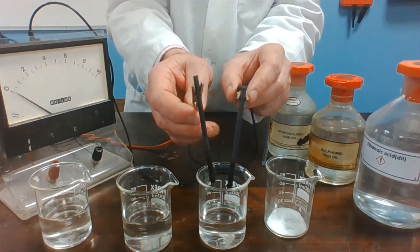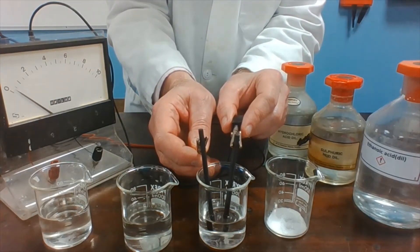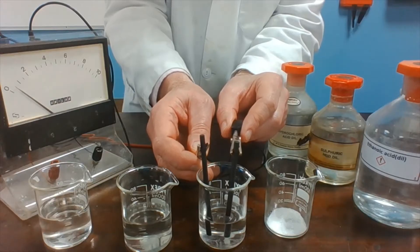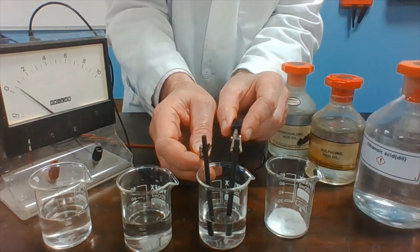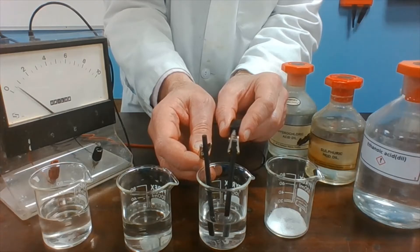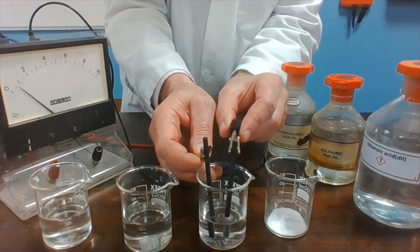Moving on to the ethanoic acid. This time, there is only a slight movement on the ammeter. But there are still bubbles of gas coming off at the electrodes, if you look carefully.